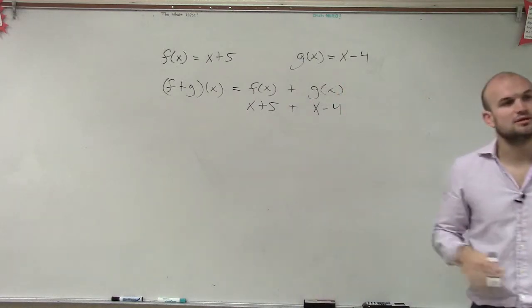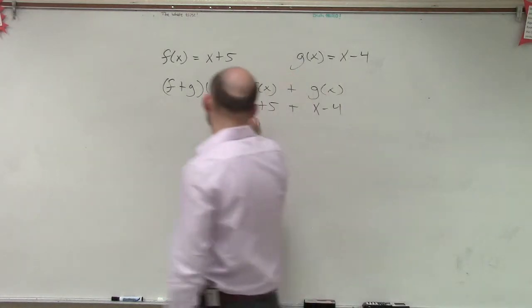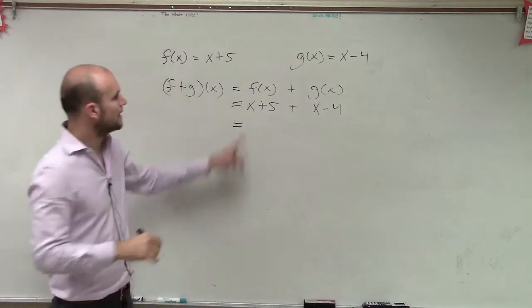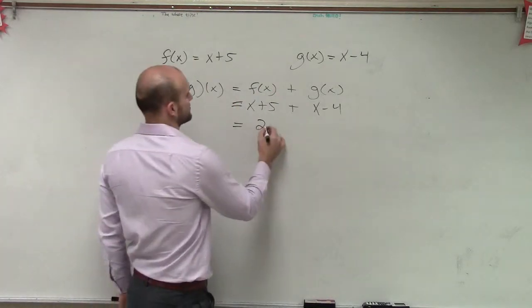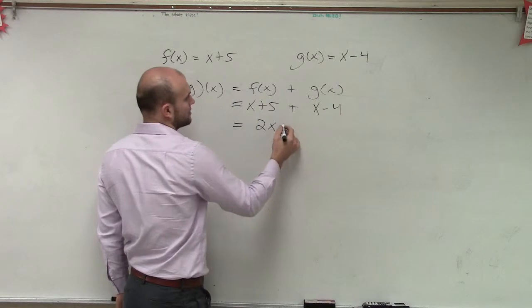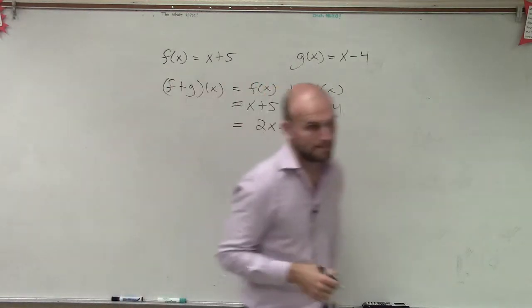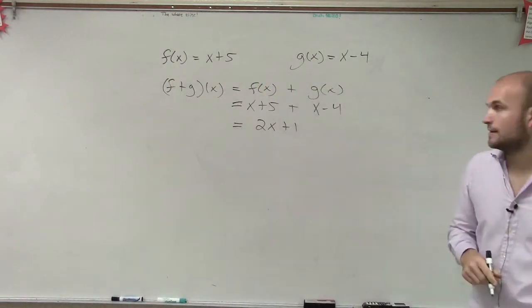Now we just combine like terms. So therefore, x plus x is 2x, 5 minus 4 is positive 1. And that's the first one.